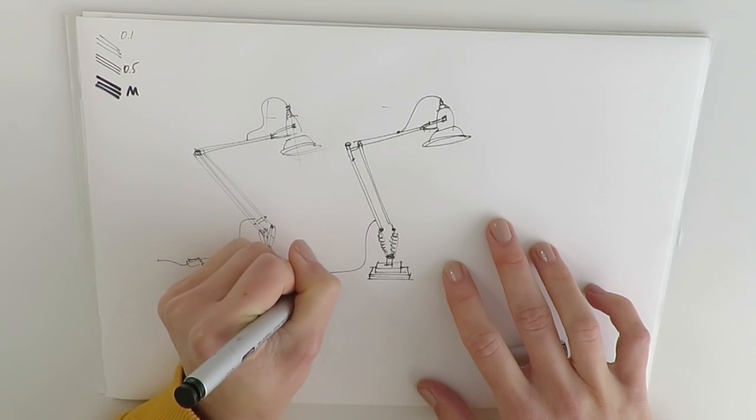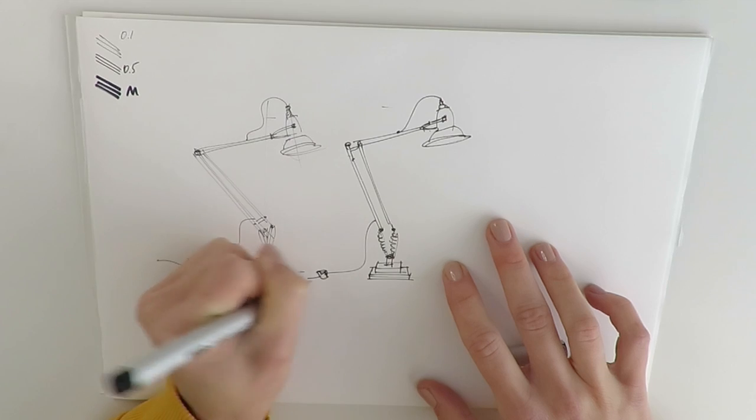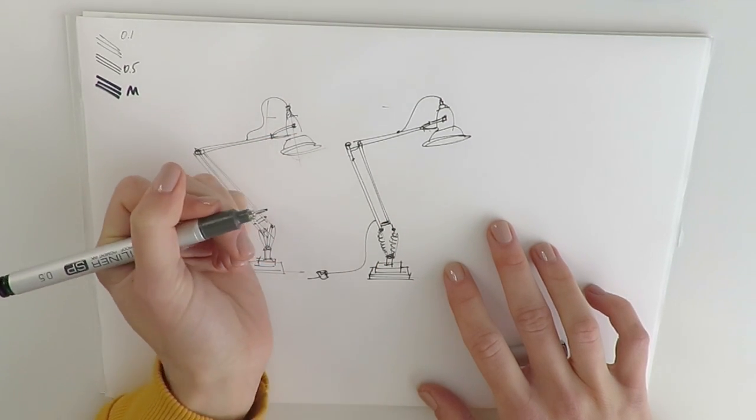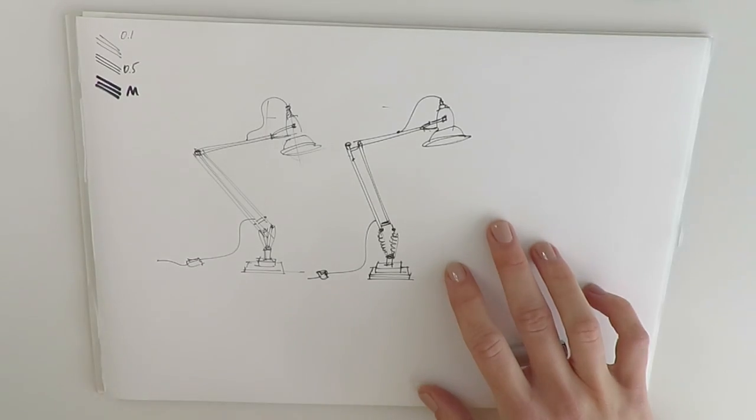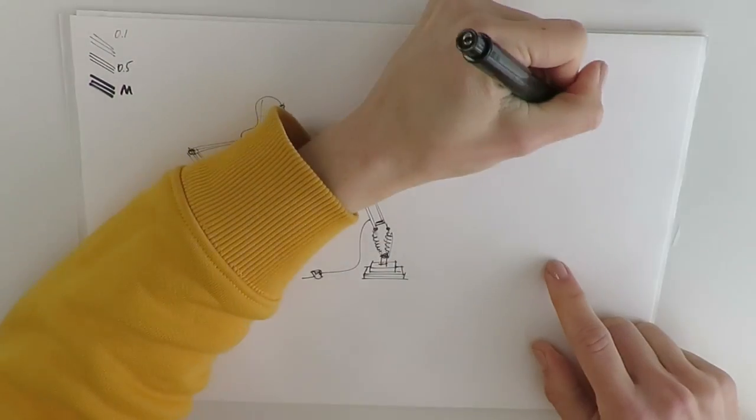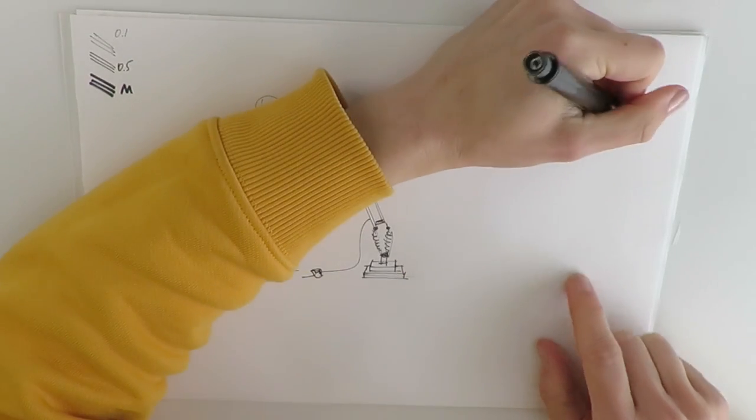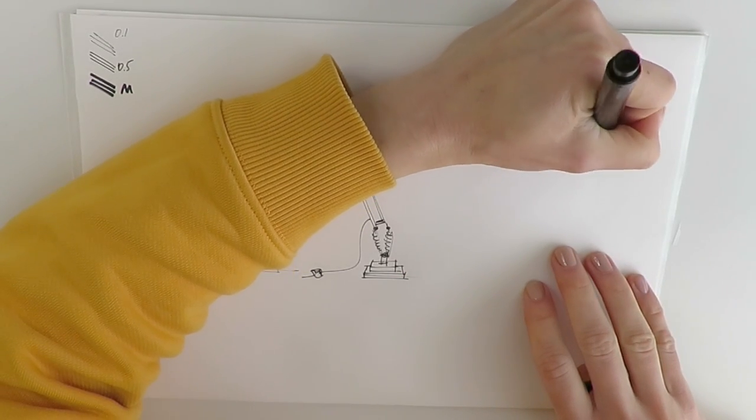And the idea behind this tutorial is to examine the overall form of an object as well as the unique design details of it plus exploring different pen thicknesses.